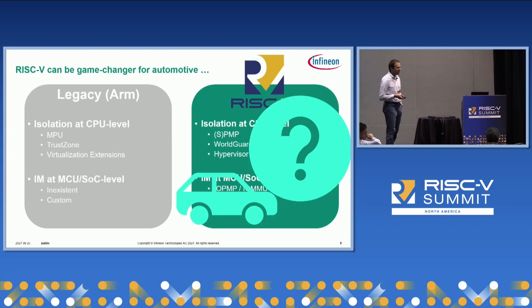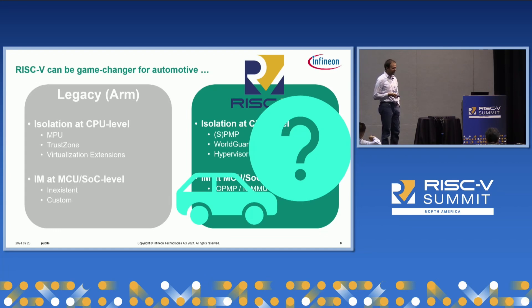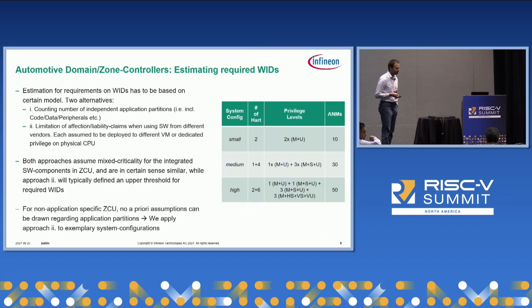TrustZone is predominantly oriented to do this from a security perspective. And we would like to show what we see for WorldGuard and how it can also be used as a freedom-from-interference solution from a pure safety perspective. So the question is: I have lots of isolation mechanisms now — what is actually missing here from an automotive perspective?